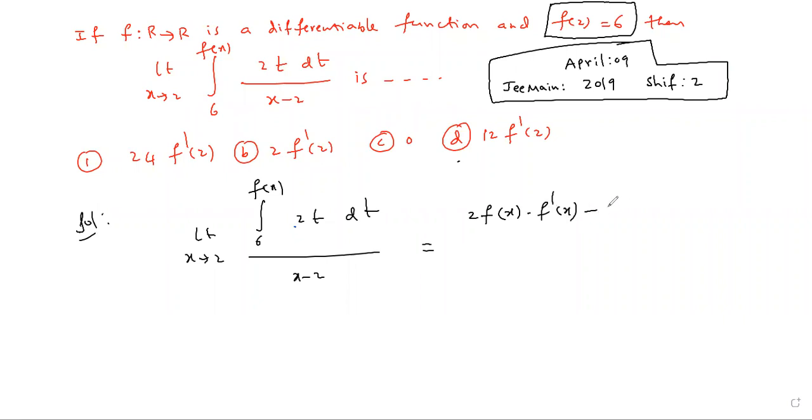Of upper boundary minus substitution of lower boundary into differentiation of lower boundary. This is called Leibniz, and that's the simple method. By x minus 2, differentiation - normal differentiation. x differentiation: 1, 2 differentiation: 0. Limit extends to 2.